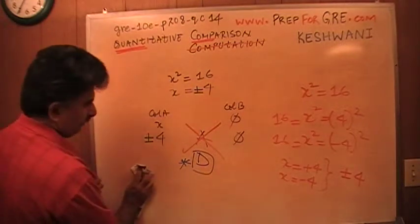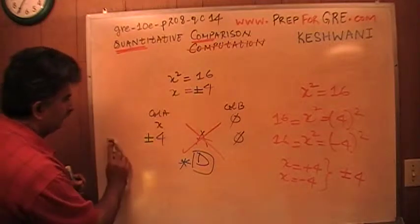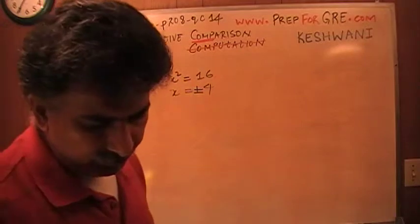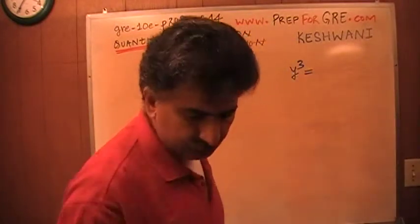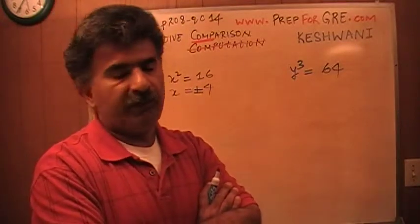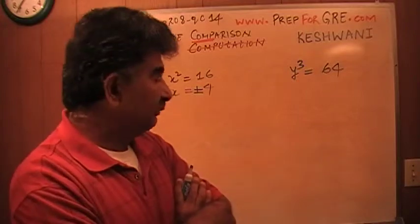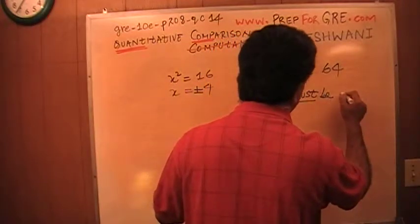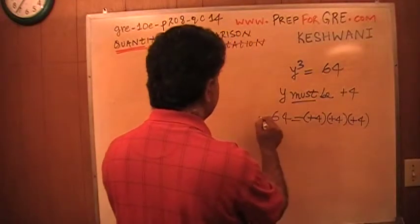Now let's do the problem they actually gave us. X squared equals 16, and they also tell you that Y cubed equals 64. X is either positive 4 or negative 4. But is it also true that Y is positive 4 or negative 4? The answer is no — Y cannot be negative 4, because negative 4 cubed would be negative 64. Since Y cubed equals 64, Y must be positive 4, the same as 4 cubed.